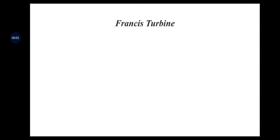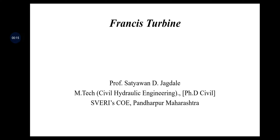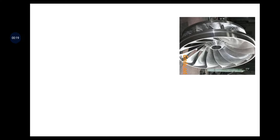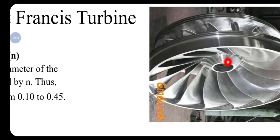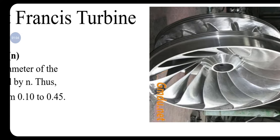Good morning, dear student friends. Today we are going to discuss the further part of the turbine, that is the Francis turbine. We are going to cover its design aspects — various design considerations and points required for the analysis part. In the right corner we find the runner of a Francis turbine with vanes mounted over it; the shaft is in a vertical direction, guide vanes direct the water toward the vanes, and the water moves toward the center — this is a radially inward Francis turbine.